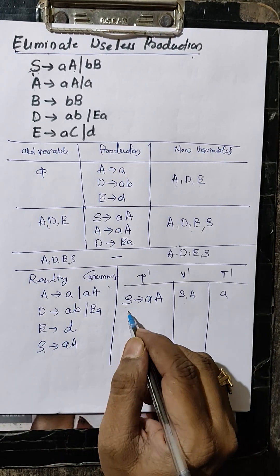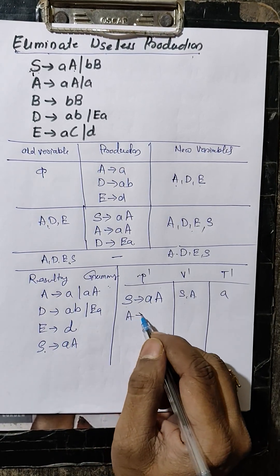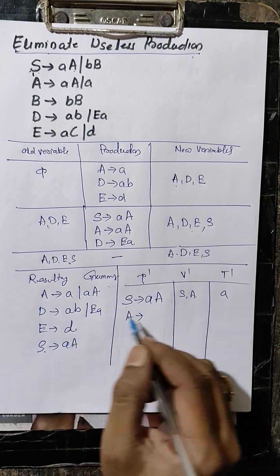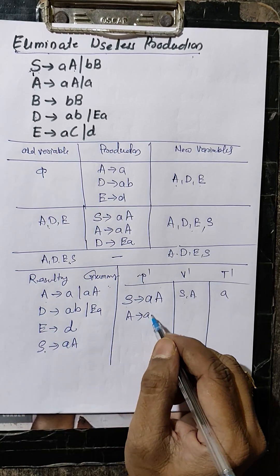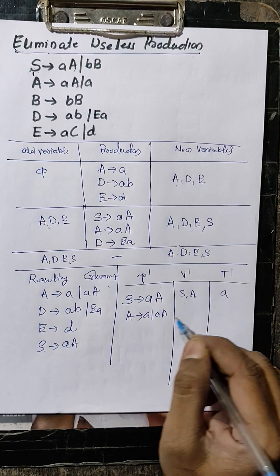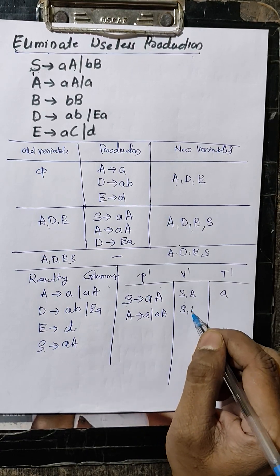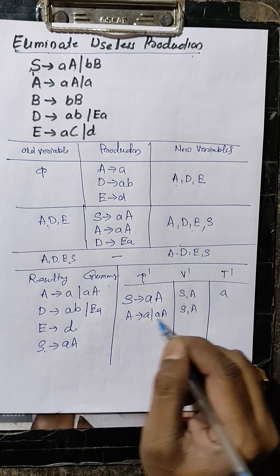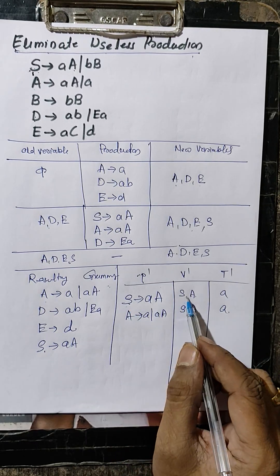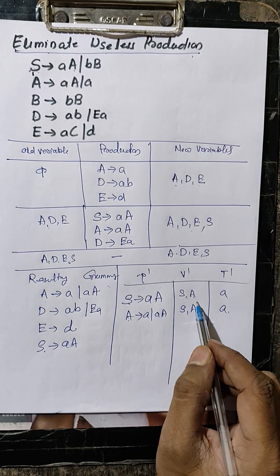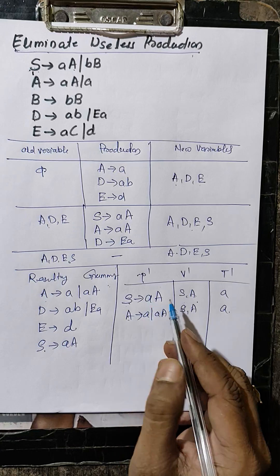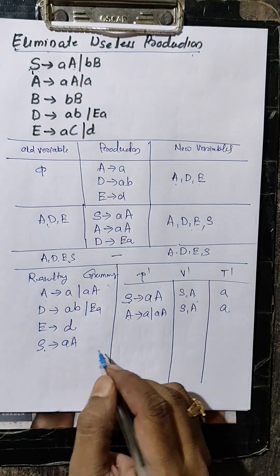S is over, new symbol is A, then productions of A: A produces A or AA. Variables old plus new are S and A. Is there a new variable? No. S is over, then A is over — after eliminating useless production.